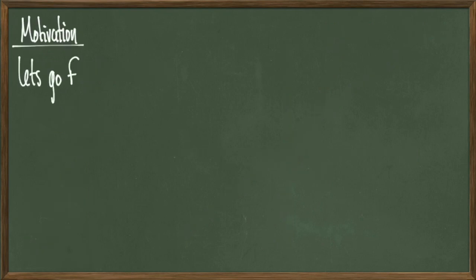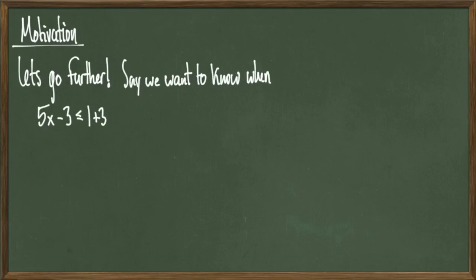But what if I took this a step further? Let me take the same equation and tweak it just a little bit. What if I want to know where 5x minus 3 is less than or equal to 1 plus 3x? So what I'm looking for are the values of x that make the left-hand side less than or equal to the right-hand side.